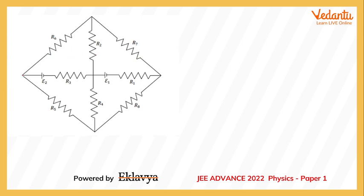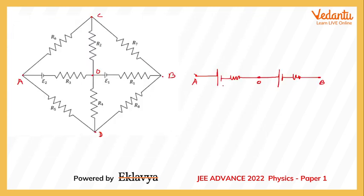In the modified circuit, I'll label the points A, O, B again, with the upper point as C and the merged lower point as D. The branch AOB remains as is — 6 volts for E2 and 12 volts for the other battery. Drawing branch OC, which now overlaps with OD, so C and D are merged into a single point, labeled both C and D.